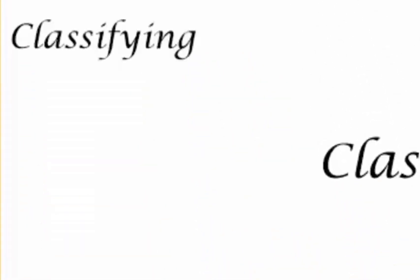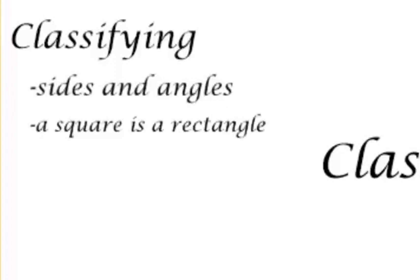Now when we think about classifying, we are again thinking about the sides and the angles. And it's also important to remember that some of these characteristics do overlap. A square is a rectangle, but not every rectangle in return is a square. So let's work on identifying some of them.